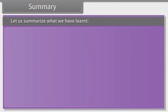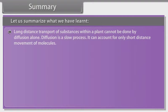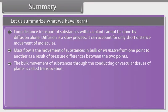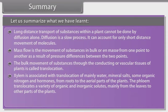Summary. Let us summarize what we have learned. Long distance transport of substances within a plant cannot be done by diffusion alone. Diffusion is a slow process. Mass flow is the movement of substances in bulk or en masse from one point to another as a result of pressure differences between the two points. The bulk movement of substances through the conducting or vascular tissues of plants is called translocation. Xylem is associated with translocation of mainly water, mineral salts, some organic nitrogen and hormones from roots to the aerial parts of the plants. The phloem translocates a variety of organic and inorganic solutes, mainly from the leaves to other parts of the plants.